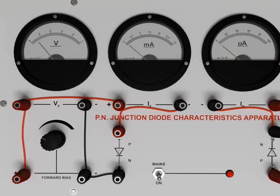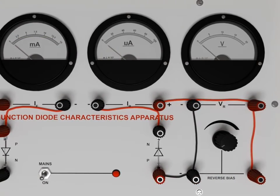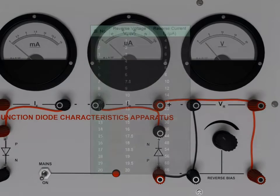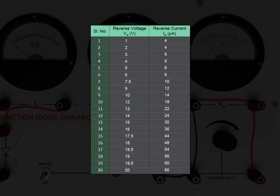Now, for reverse biasing, rotate the knob on the right side of the circuit board in steps of 1 volt and note the corresponding readings in the microammeter. Record your observation in a tabular column.